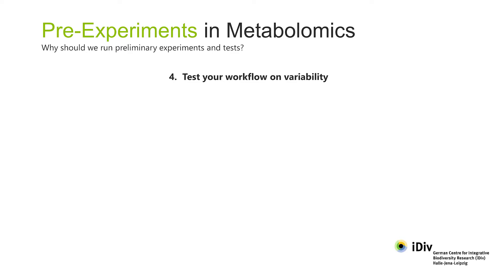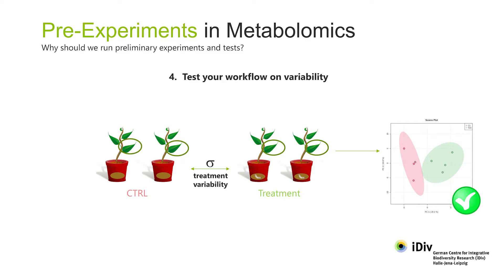Reason four: preliminary experiments let you test the effect of your workflow on the variability of the data. For clear answers to our biological question, we want clear statistical effects of our treatments on the organisms we're testing. In the example here, we want to know if the larva feeding on the roots changes the metabolites produced by the leaves. We want the effect of the root feeding treatment to be clear and not hidden by variance.